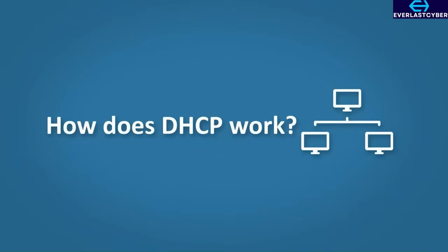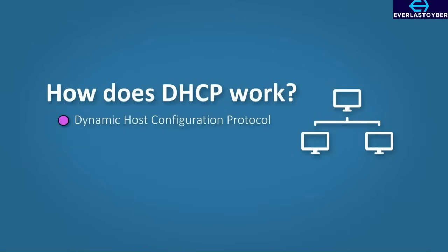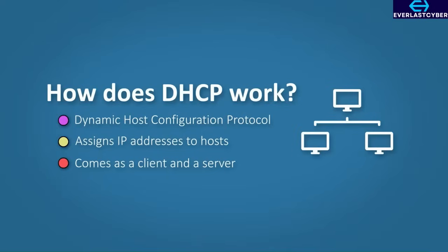We will also be looking at how DHCP works. DHCP stands for Dynamic Host Configuration Protocol. Its job is to assign unique IP addresses to our hosts. It comes in two flavors — as a client and as a server. It also provides other network addresses such as the subnet mask, the default gateway, and the DNS address.